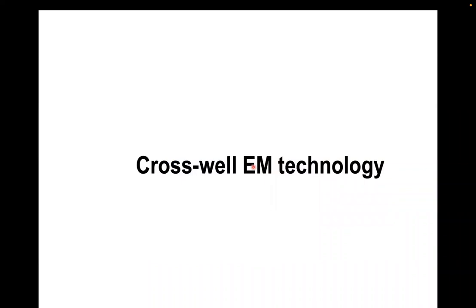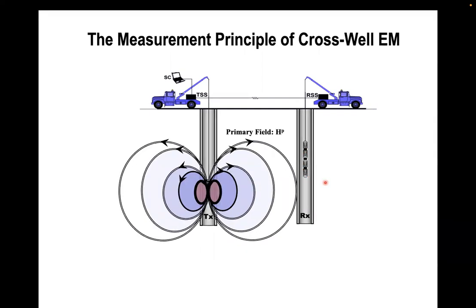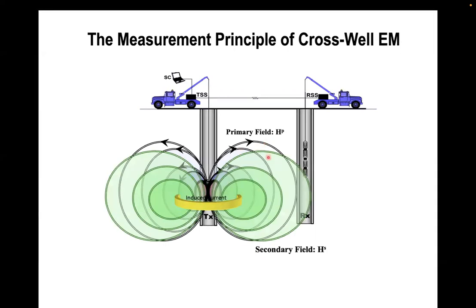So what is Crosshole EM technology and how does it work? As indicated by the name, Crosshole EM needs two wells — one for the transmitter and one for the receiver. During measurement, the transmitter transmits electromagnetic waves, called the primary field. This primary field interacts with any media or material between the two wells, generating secondary fields and induction currents. Both the primary and secondary fields are recorded on the receiver side. By data processing and interpretation, we are able to recover the resistivity distribution between the two wells.